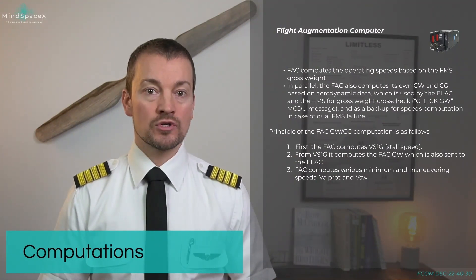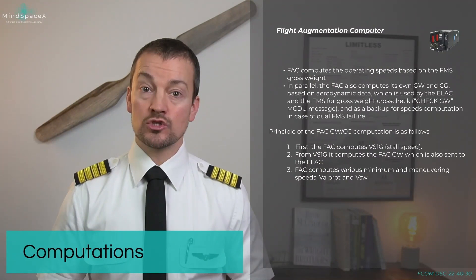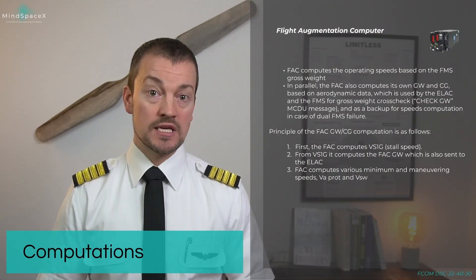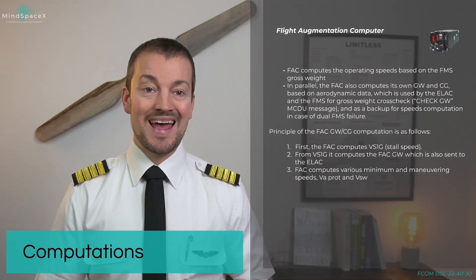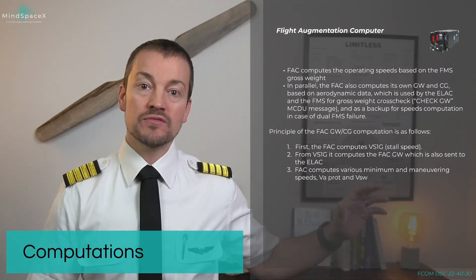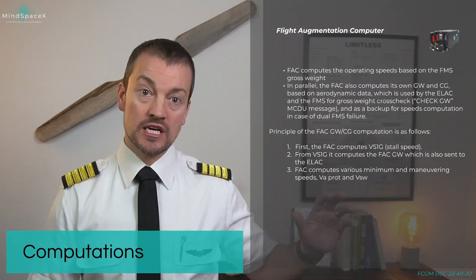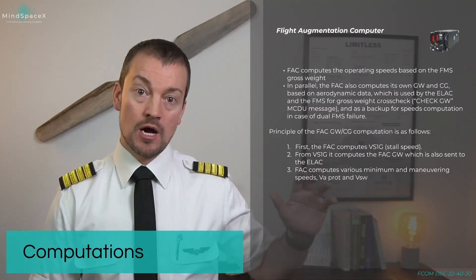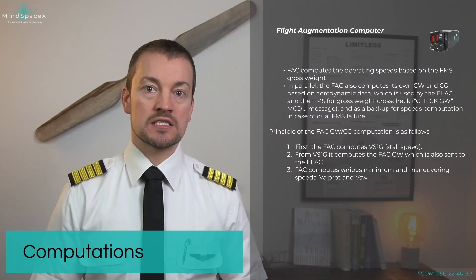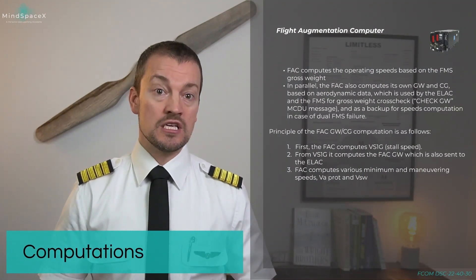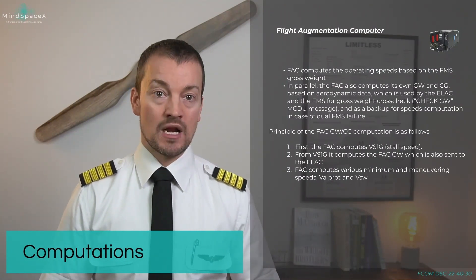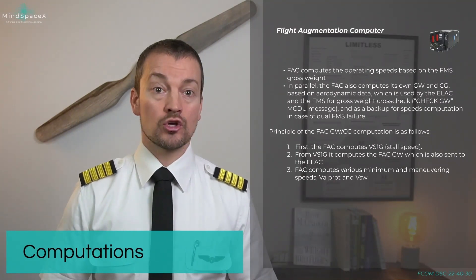After having calculated the gross weight, the FAC then computes its own minimum and maneuvering speeds together with V-alpha prot and stall warning for the aircraft. These speeds are not for the actual protection that comes from the ELAC — they are for display purposes and for other systems such as aural warnings that come through the loudspeaker and through the flight warning computers.